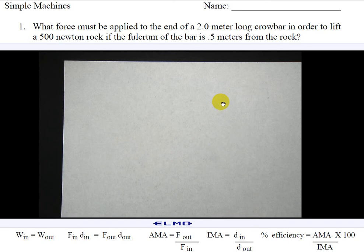What force must be applied to the end of a two meter long crowbar in order to lift a 500 Newton rock if the fulcrum of the bar is 0.5 meters from the rock?